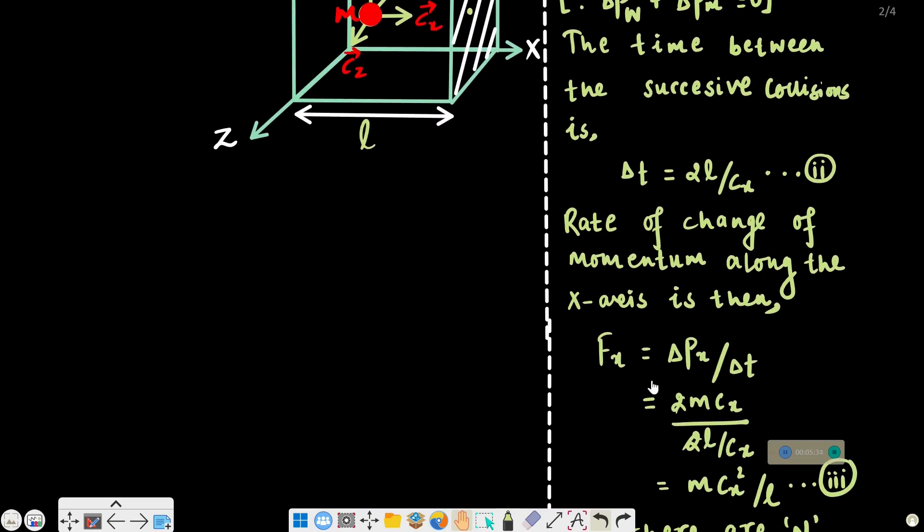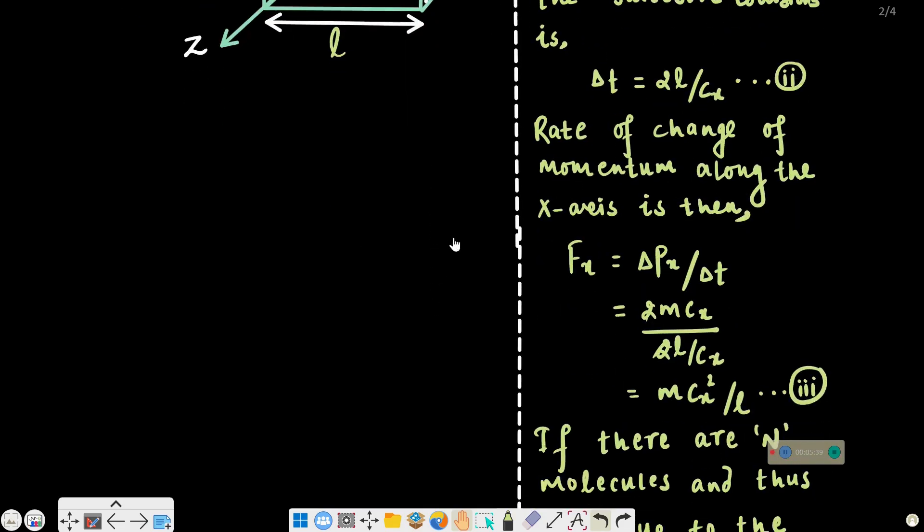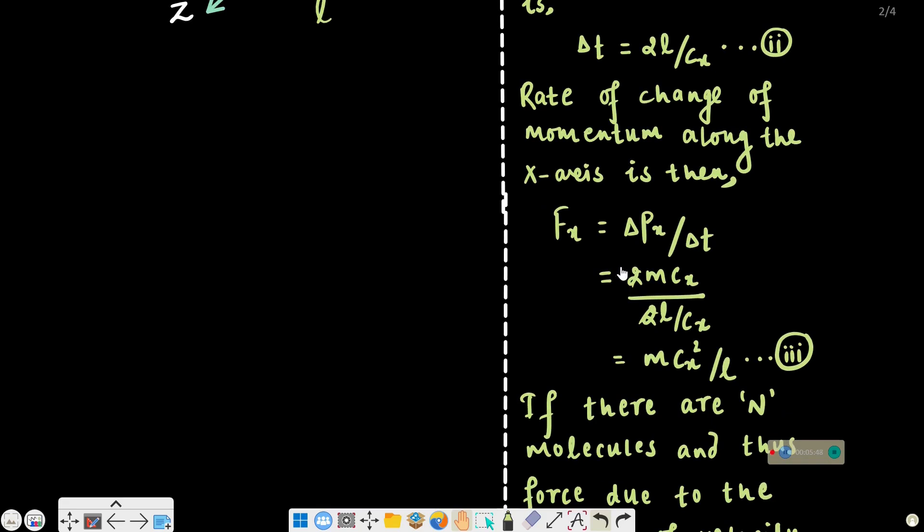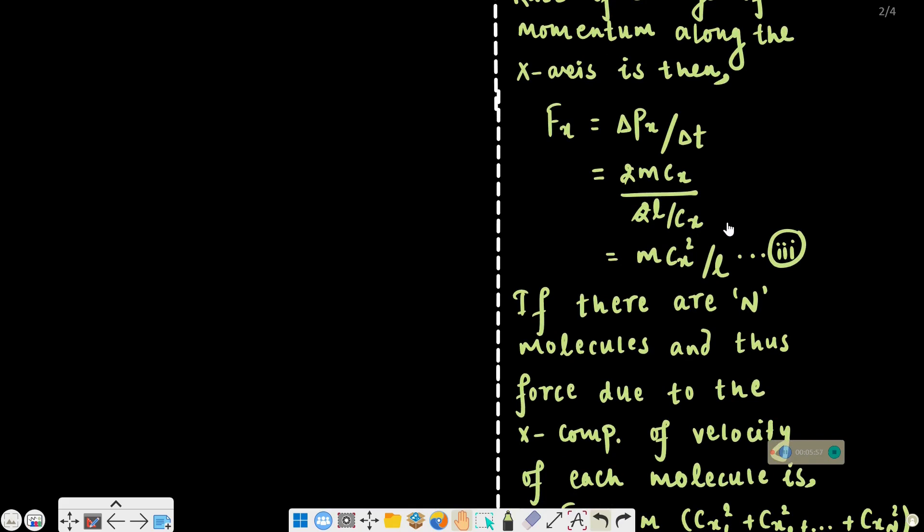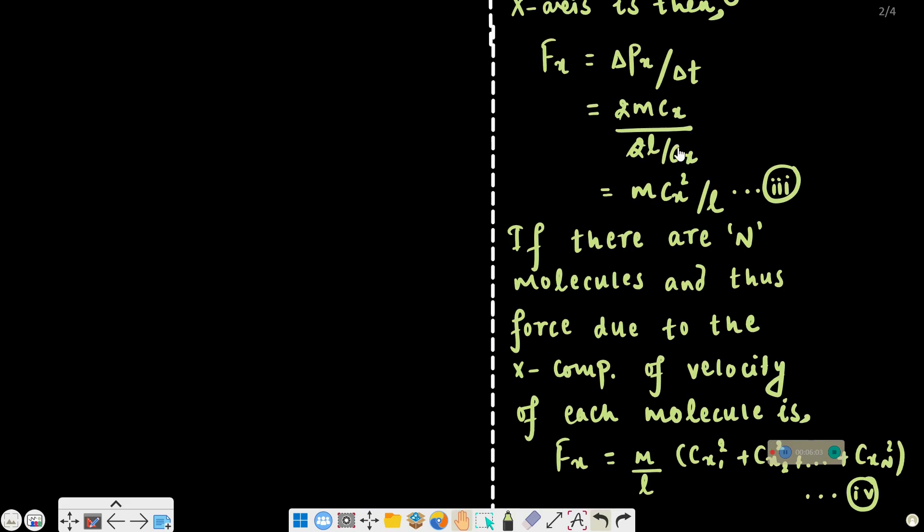The rate of change of momentum equals force. So the force experienced by the wall is del p divided by del t. This equals 2mcx divided by 2L/cx, which simplifies to mcx²/L. This is the force along the x-axis due to a single molecule of mass M.